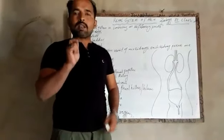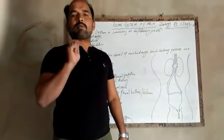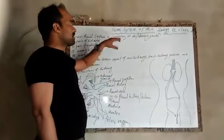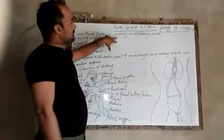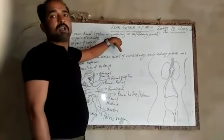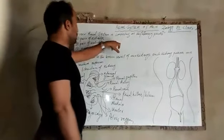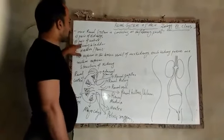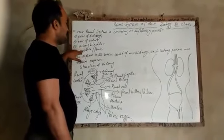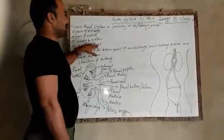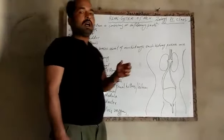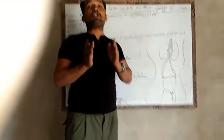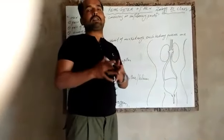The renal system consists of the following parts: a pair of kidneys, a pair of ureters, a urinary bladder, and the urethra. These are the parts which contribute to form the renal system.